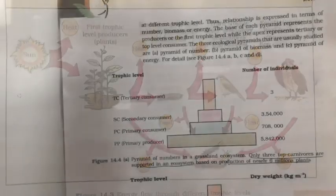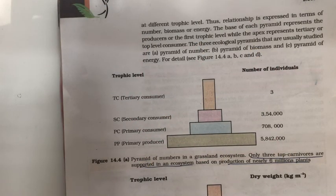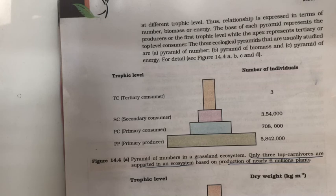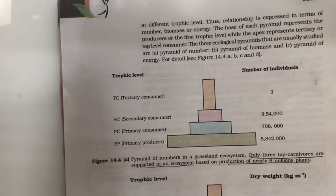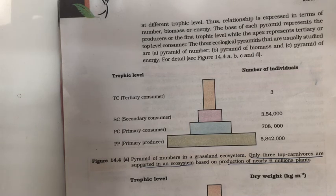The trophic structure of an ecosystem can be represented by comparing standing crop — the number of individuals, the biomass, or the energy fixed per unit area at different trophic levels. These graphical representations are called ecological pyramids. There can be a pyramid of biomass, a pyramid of numbers, and a pyramid of energy.